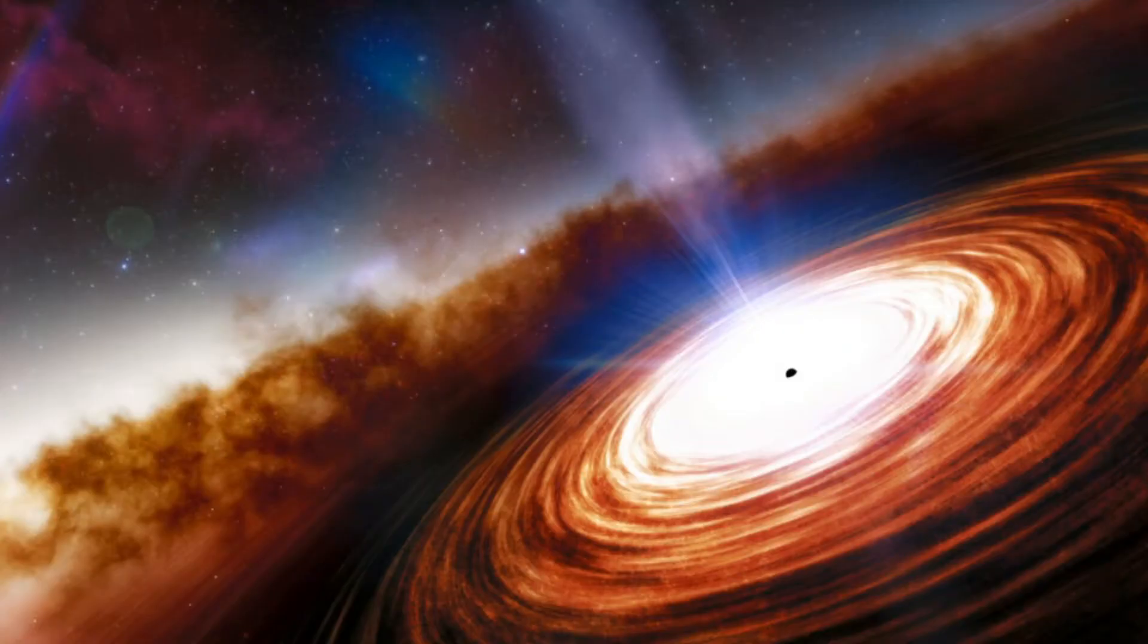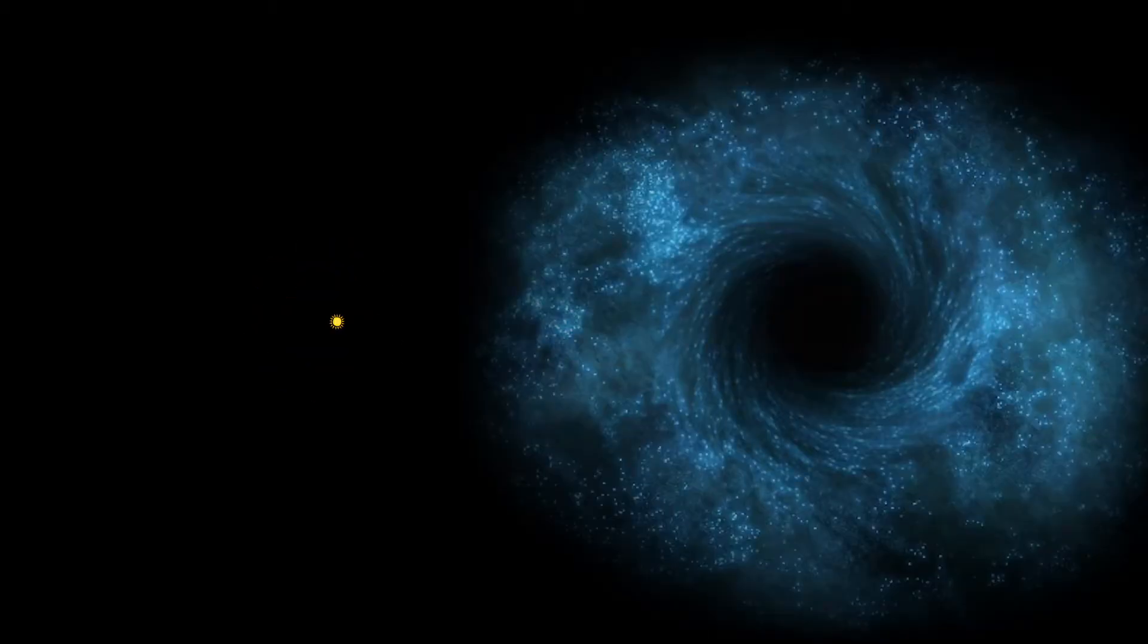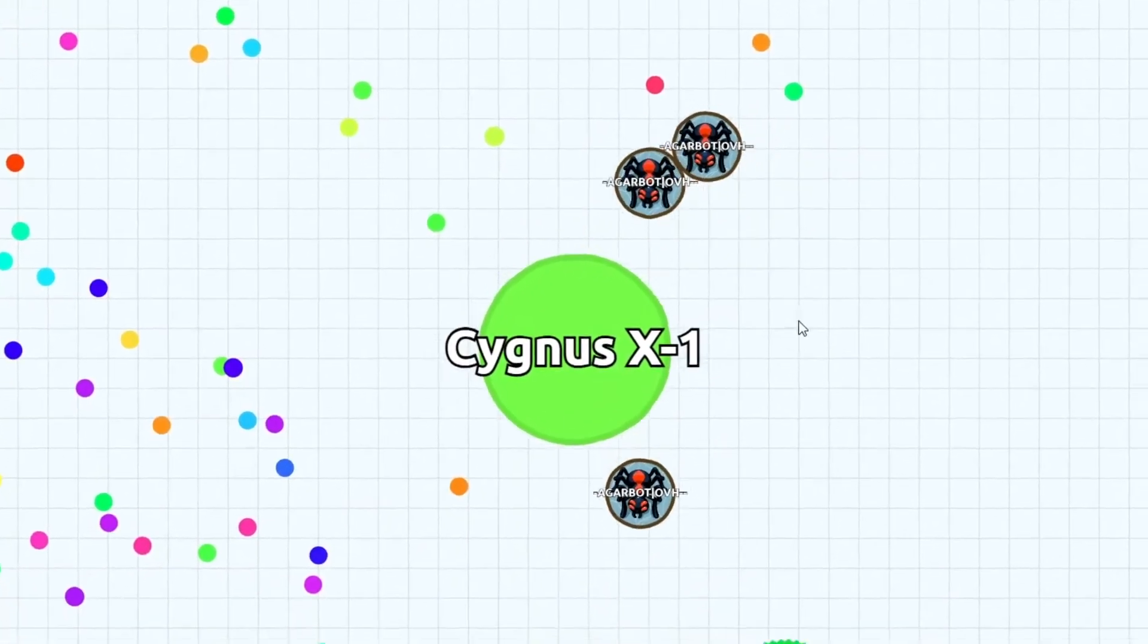Supermassive black holes essentially live in the center of most galaxies and can get up to supermassive sizes. I'm talking like tens of billions of times larger than our sun. Supermassive black holes also just eat everything and anything in its path. So it's like a big game of agario.